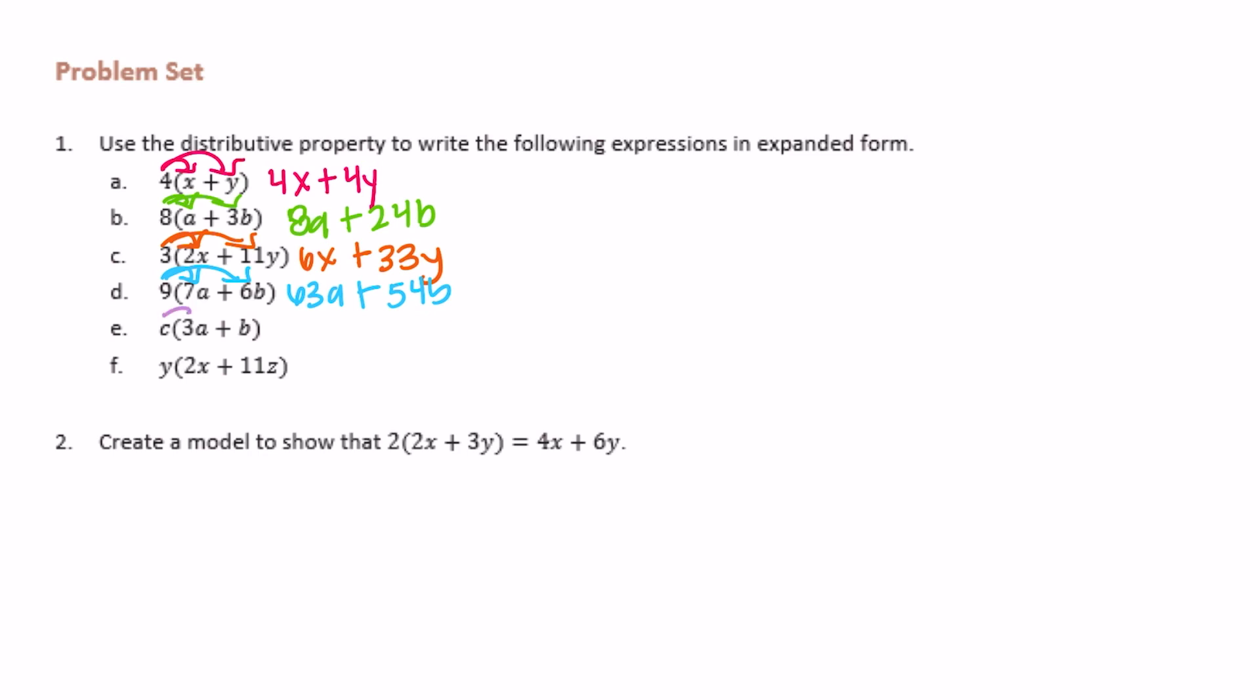For c times 3a, we can multiply by c but it's not going to change the 3, so this becomes 3ac plus c times b would be bc or cb, either order. And the last one, y times 2x would be 2xy plus y times 11z would be 11yz or 11zy. The order doesn't matter.